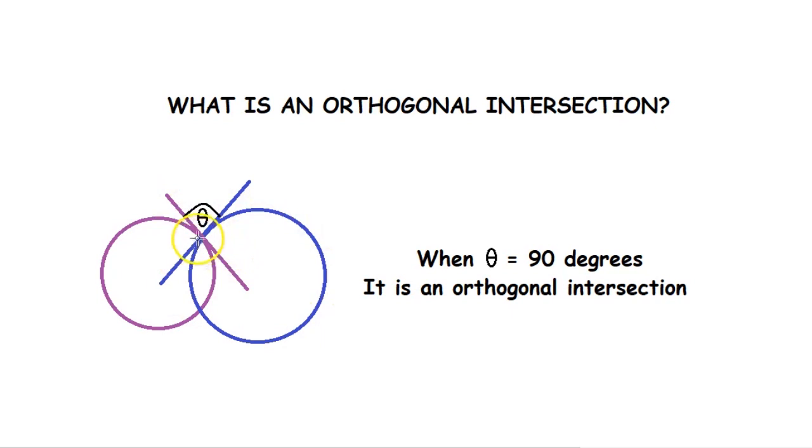At the point of intersection we'll draw two tangents, one tangent for each circle. Now these tangents will make a certain angle theta between each other. This angle theta will vary based on the position of the two circles.